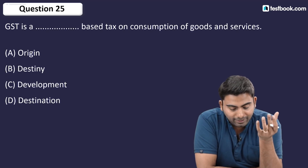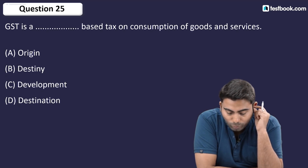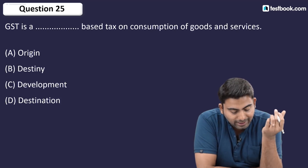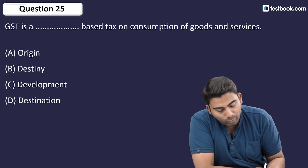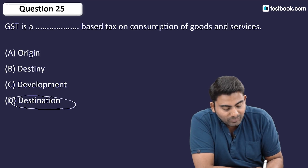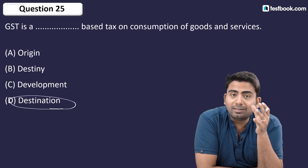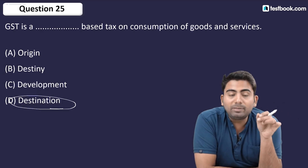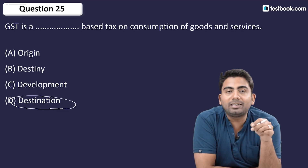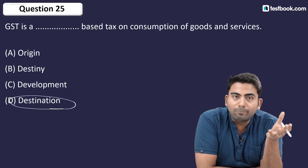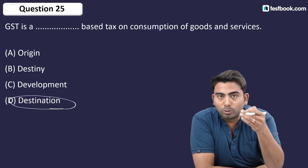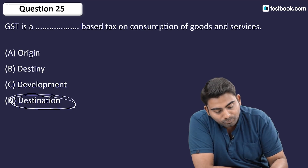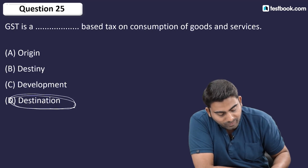Question number 25 is a fill-in-the-blank: GST is a ___-based tax on consumption of goods and services. The answer is Destination-based. Destination means the final destination — the consumer. GST is a destination-based tax because the consumer is the final destination who ultimately pays it.